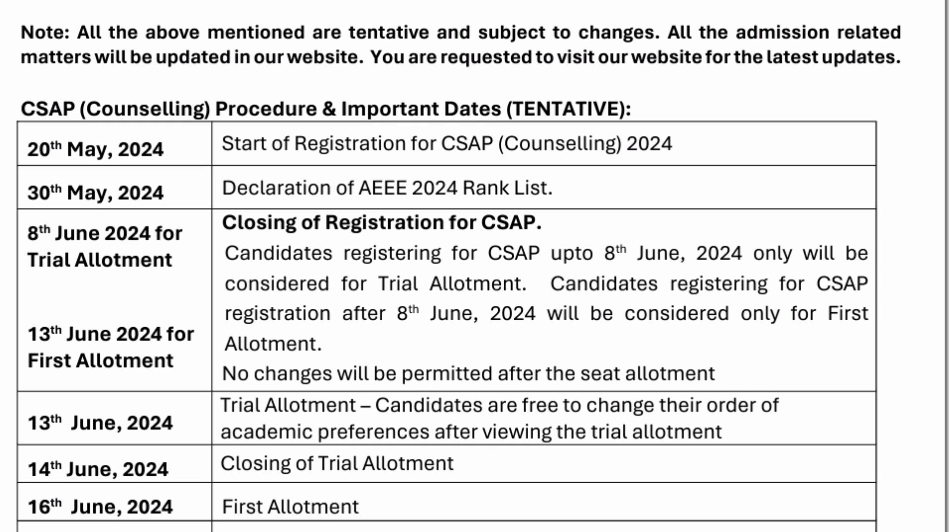The result of the trial allotment is going to be out on 13th June. On 13th June, you can open the counseling portal and check what branch has been allotted to you in the trial allotment phase. You are free to edit this trial allotment seat so you can get a better seat in the actual first round. Trial seat allotment editing will run from 13th June to 14th June — two days are given to adjust your preference order.